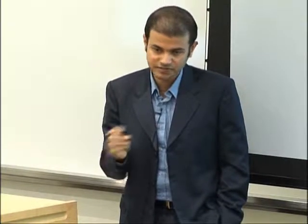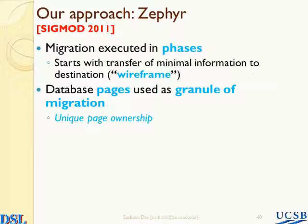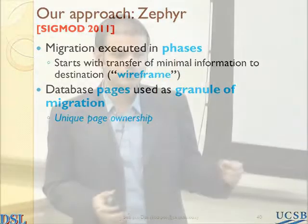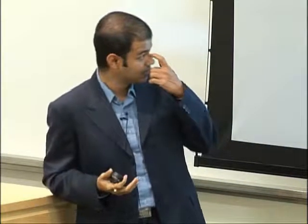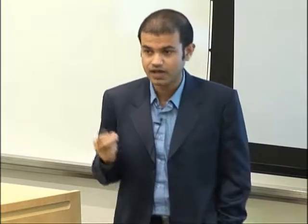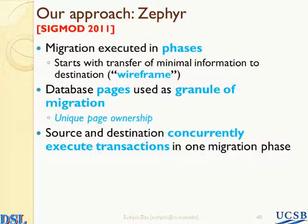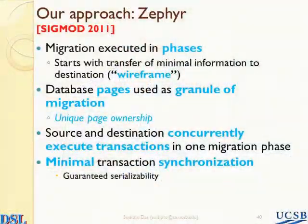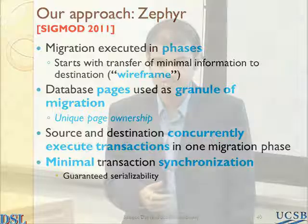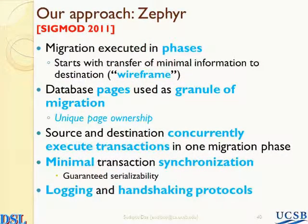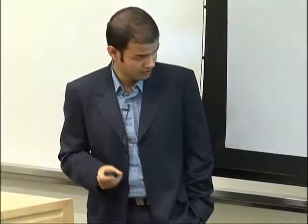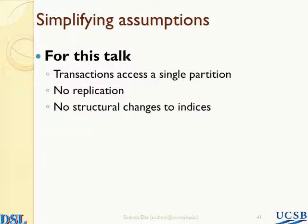Our approach is that instead of viewing migration as one chunk being migrated, we break down migration into a collection of phases. Migration starts with a transfer of minimal information from the source to the destination — we call this the wireframe. The minimal information consists of the database schema, user authentication information, and something called the index wireframe. Instead of viewing the entire database to be migrated as a whole, we view a database as a collection of database pages, and use the concept of unique page-level ownership and migration of database pages on demand from the source to the destination. To allow for zero downtime, there is a phase in migration where we allow both the source and the destination to concurrently execute transactions, and we show how you can have minimal transaction synchronization and still guarantee serializability.